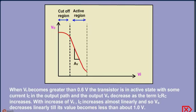When VI becomes greater than 0.6V, the transistor is in active state with some current IC in the output path, and the output voltage VO decreases as the term IC·RC increases. With increase of VI, IC increases almost linearly and so VO decreases linearly until its value becomes less than about 1V.